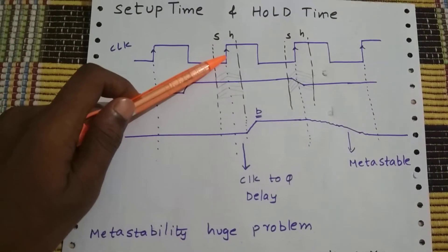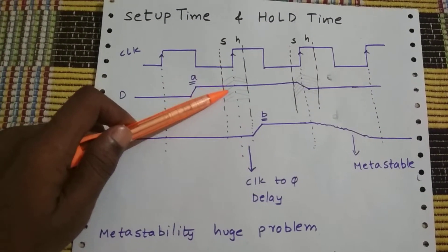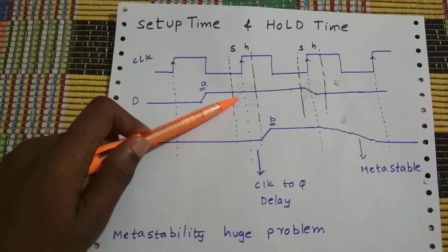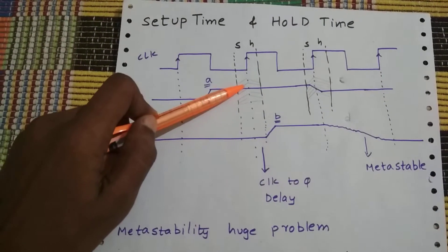Before the rising edge of clock, the input must not change. This is the period where the input should not change. This is the setup window.